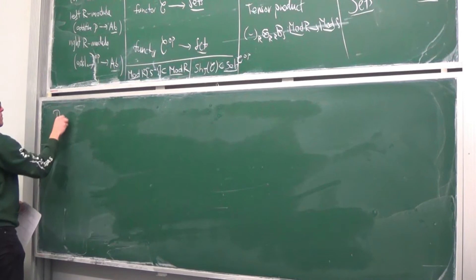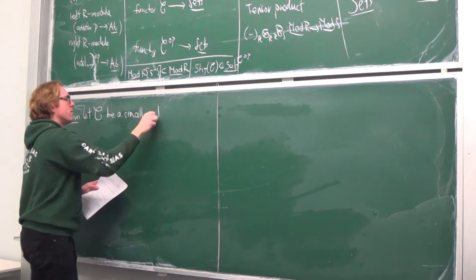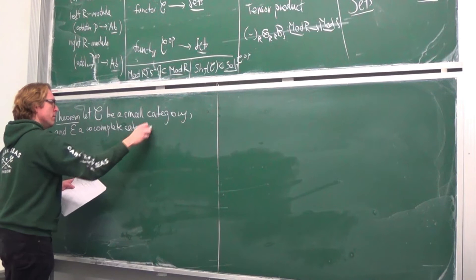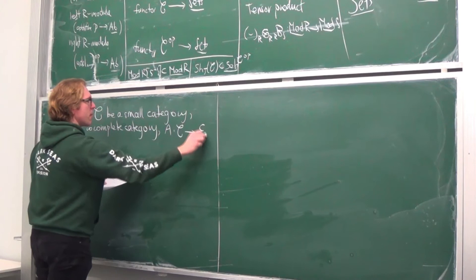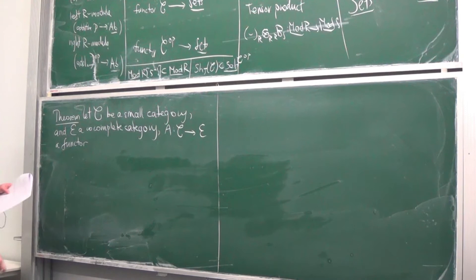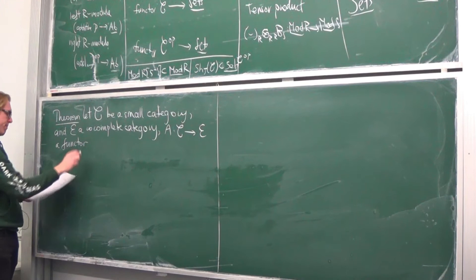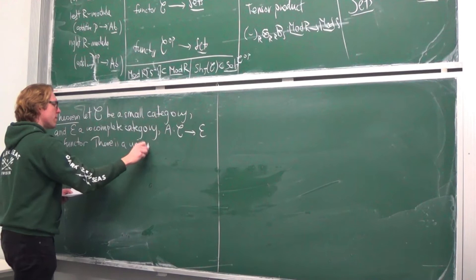Here is the theorem: let C be a small category and E a co-complete category, and A a functor from C to E. There is a unique — again in the same sense — extension of A to a colimit-preserving functor A-bar from sets^(C-op) to E, using your data of A. Just as the ring sits inside its category of modules, C sits inside the category of pre-sheaves via the Yoneda embedding, and I want this diagram to commute up to natural isomorphism.